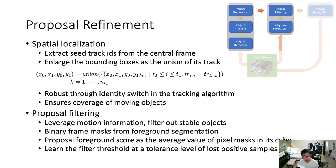Now we have the cubes, but we only used object detection to generate seed objects, so we only used stable information from each frame and no motion information. We need a proposal filtering part that leverages motion information to filter out stable objects. This is especially useful for parking lots where there are many stopped cars without activity occurring. We use an existing foreground segmentation algorithm to acquire binary frame masks, calculate an average value of the pixel mask within each cube, and learn a filter threshold at a tolerance level of how many positive samples are filtered out.